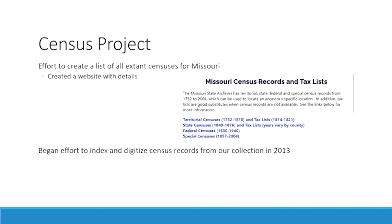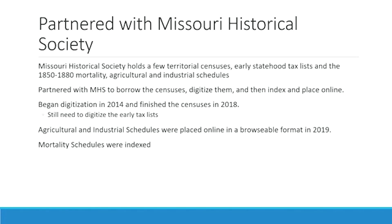Our census project began as a very small effort to create a list of all extant censuses for Missouri just for our own edification. We had enough information gathered that we decided to create a website so everyone would know what types of censuses existed for Missouri. We then began an effort to index and digitize censuses because they are such a wealth of information for genealogists, and so many of the non-federal population schedules weren't online anywhere. We partnered early on with Missouri Historical Society in St. Louis, who hold a number of territorial censuses, early statehood tax lists, and the 1850 to 1880 mortality, agricultural, and industrial schedules.